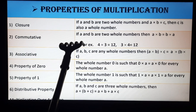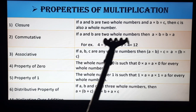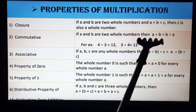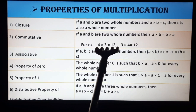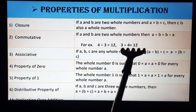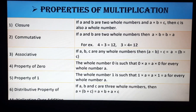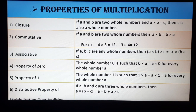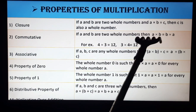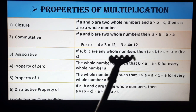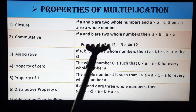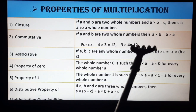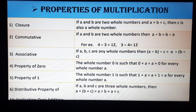The commutative property: if a and b are two whole numbers, then a × b = b × a. For example, 4 × 3 = 12 and 3 × 4 = 12, so this is called commutative property. After changing the order, the result will be the same. 4 × 3 gives 12, and 3 × 4 also gives 12 — the result remains the same.